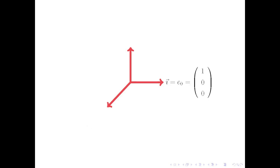Thus, vec i equals e0 and has components 1, 0, 0. Vec j equals e1 and has components 0, 1, 0.